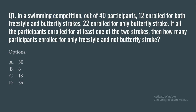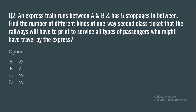The next section is numerical ability. Question 1: In a swimming competition, out of 40 participants, 12 enrolled for both freestyle and butterfly strokes and 22 enrolled for only butterfly stroke. If all participants enrolled for at least one of the two strokes, how many participants enrolled for only freestyle and not butterfly? Options: 36, 18, or 34.